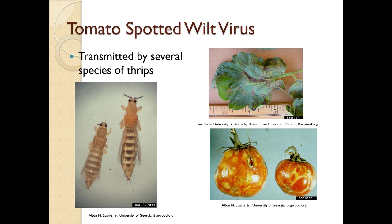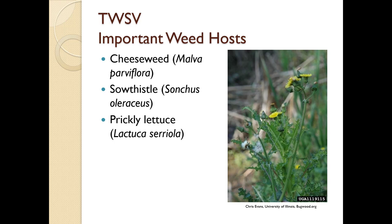Tomato spotted wilt virus is spread by several species of thrips, which are very tiny insects that are often living in weeds around your garden, so it's really important to keep weeds away. Three weeds that will definitely provide inoculum are cheeseweed, sow thistle, and prickly lettuce.